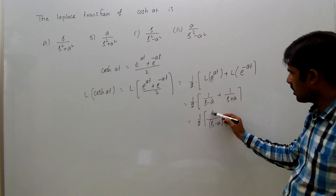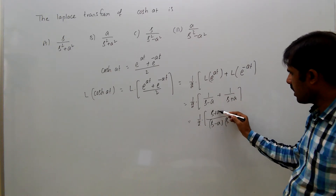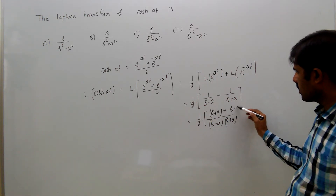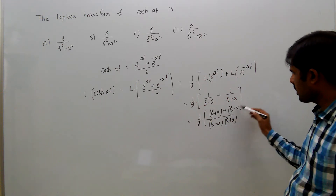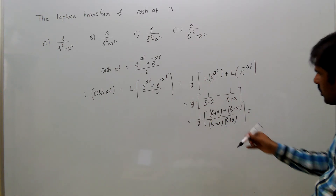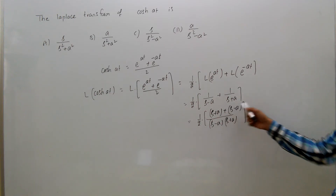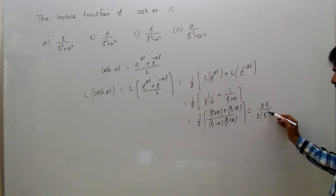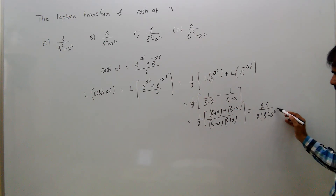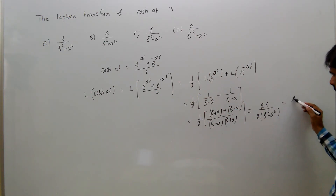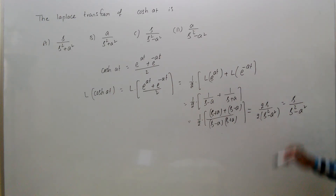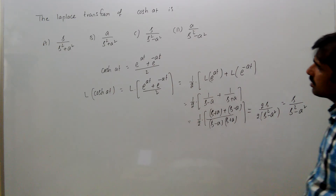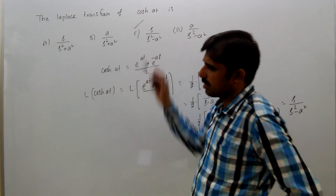Here S plus A plus S minus A equals 2S; the A terms cancel. This gives 2S divided by 2 times (S squared minus A squared). The 2s cancel, giving S by (S squared minus A squared). So option C is the correct answer.